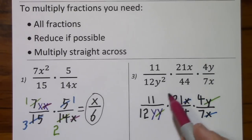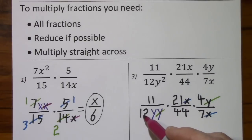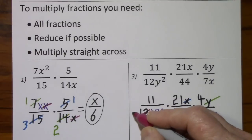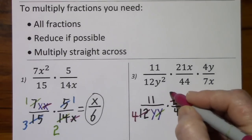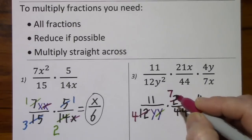Looking at the numbers now. 12 and 21 have a common factor of 3. 3 goes into 12, 4 times. 3 goes into 21, 7 times.